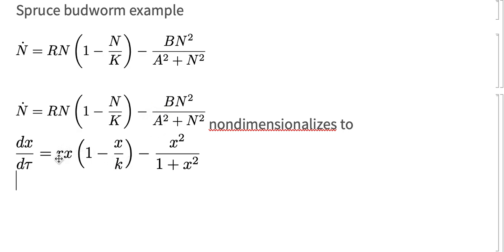So we've chosen to keep the population parameters, the R and the K, and A and B have been eliminated through the non-dimensionalization process.